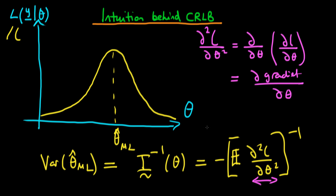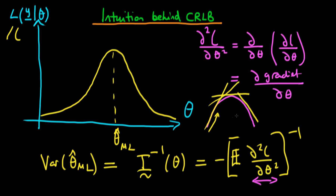We know that for a maximum, this term is going to take on a particular sign. As you increase towards a maximum, the gradient tends to increase at first — it's quite steep — then it gets shallower and shallower until it's zero, and then it continues to decrease and becomes negative. So the gradient as I increase theta is declining. In other words, the second order derivative of the log likelihood with respect to theta is going to be less than zero. That's why we put a minus sign out front, because we want our variance to always be positive.